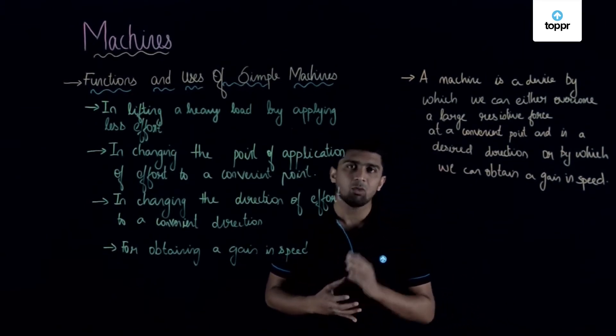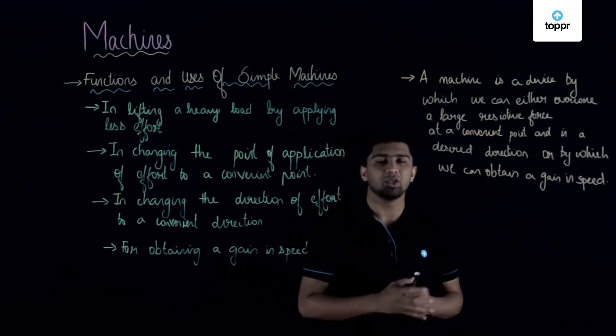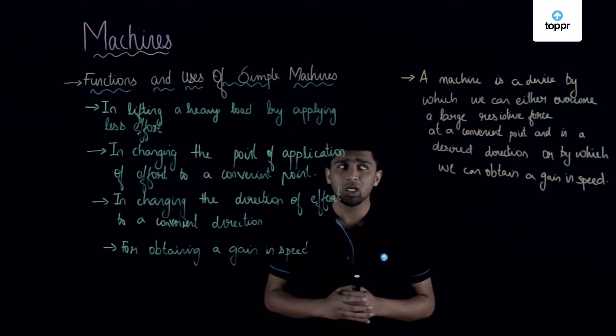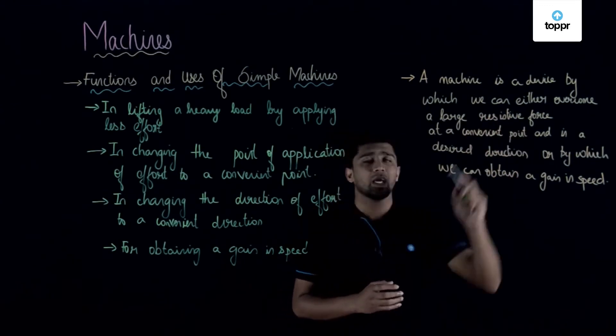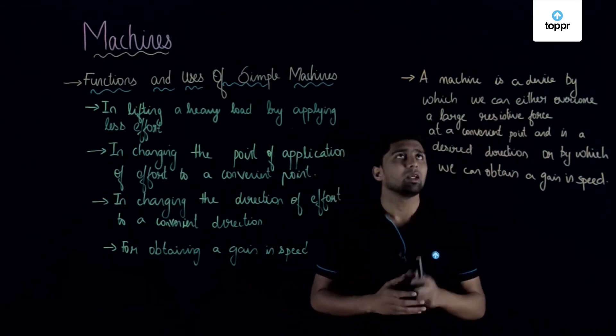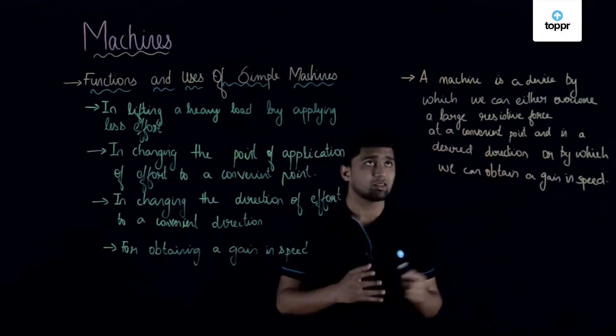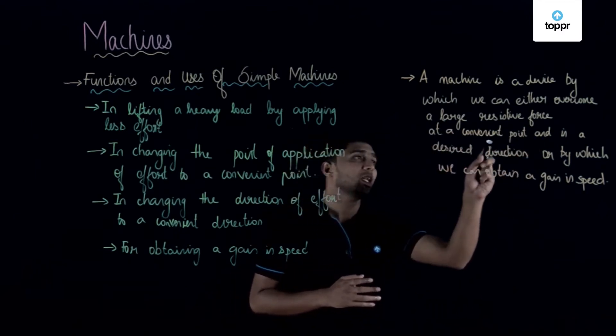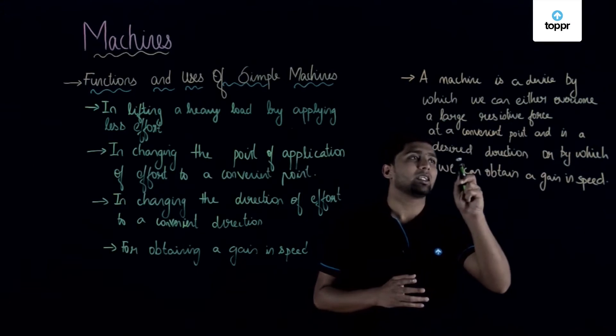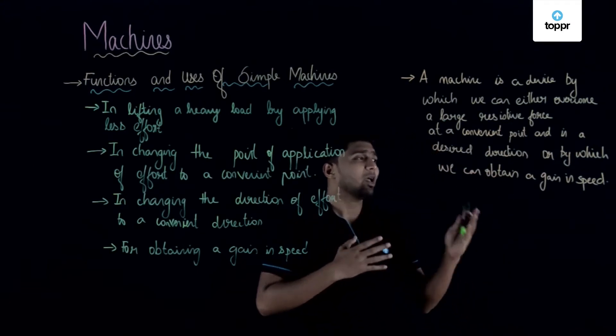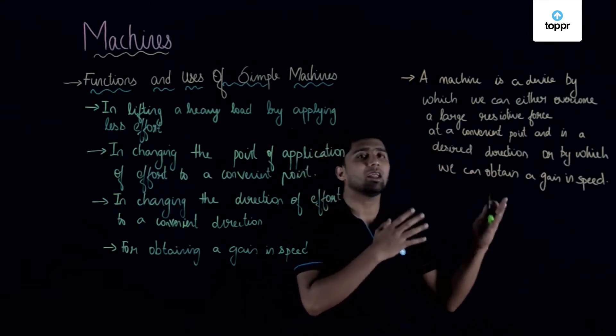So students, here in this chapter we will be discussing about machines. So what are machines? A machine is a device by which we can either overcome a large resistance or resistive force at a convenient point and in a desired direction, or by which we can obtain a gain in speed.